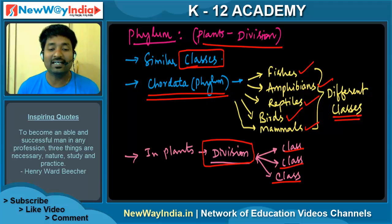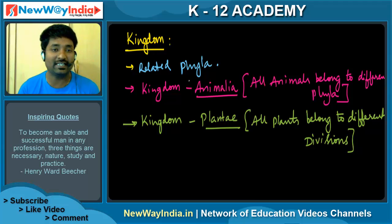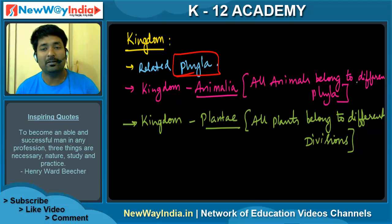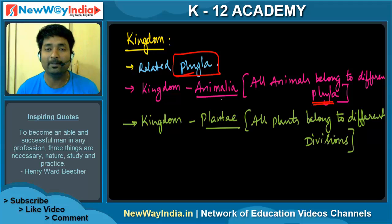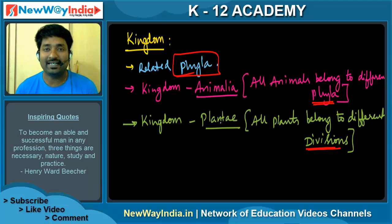The next and top taxonomic category is Kingdom. Kingdom is formed from related phyla. For example, kingdom Animalia includes all animals belonging to different phyla. Similarly, kingdom Plantae includes all plants belonging to different divisions.